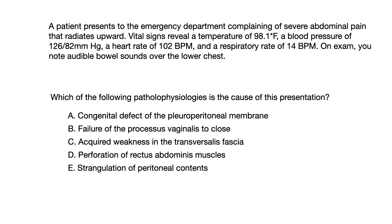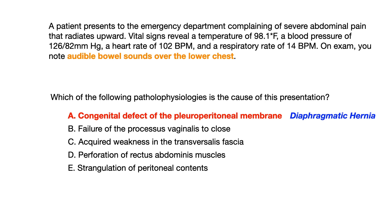If you'd like some more time to think about this, pause the video now. The correct answer choice to this practice question is choice A: congenital defect of the pleuroperitoneal membrane.